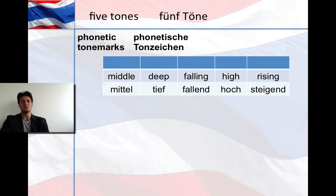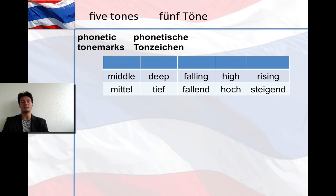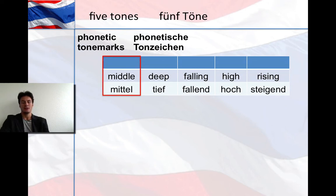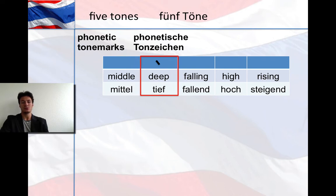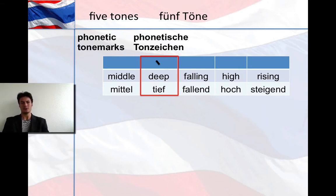You can see these tones within the box, and on top there is a dark blue box for the phonetic tone mark. The middle tone does not have a phonetic symbol because it's neutral. Deep tones have a stress mark going from left to right, facing down, indicating a deep tone. In dieser Tabelle sind die Töne angegeben, und oben im dunkelblauen Kasten folgt das phonetische Tonzeichen. Der mittlere Ton hat kein Tonzeichen, weil er neutral ist.